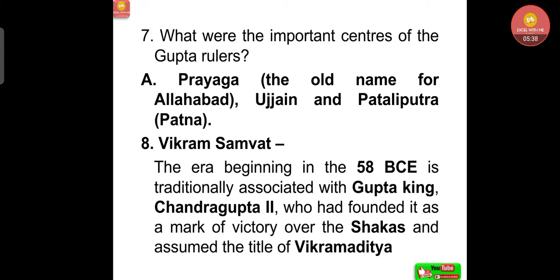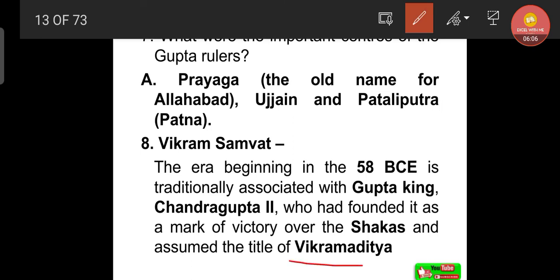The important centers of the Gupta rulers were Prayaga (old name for Allahabad), Ujjain, and Pataliputra (present-day Patna). The Vikrama Samvat era, beginning in 58 BCE, is traditionally associated with Gupta king Chandragupta II, who founded it as a mark of victory over the Shakas and assumed the title Vikramaditya. An important question: who got the title Vikramaditya? That was Chandragupta II.